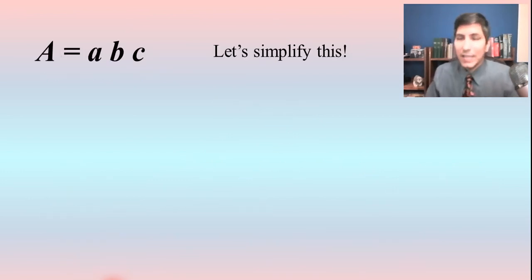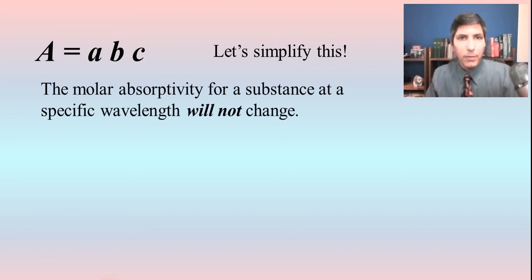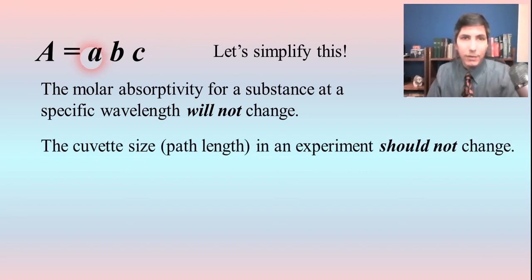Now, let's simplify this a little bit because this can be pretty complex. When we start talking about constants and path length and all that, we can simplify this down a little bit for our purposes, especially in AP chemistry. The molar absorptivity, the lowercase a here, for a substance at a specific wavelength is not going to change. It should be a constant value. And we've just got done saying that the path length, that cuvette size, which is B here, should not change. Almost always, we can be pretty sure that B is going to be one centimeter. So, that shouldn't change.